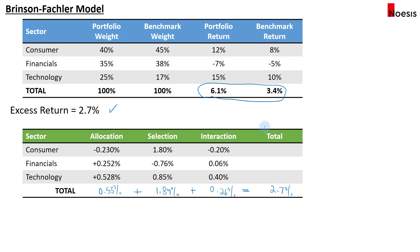When explaining the manager's performance through attribution, we say that out of 2.7%, most came from the selection effect — the manager is skilled at selecting securities in the consumer and technology sectors. For the allocation effect, the manager made the right allocation decisions in financials and technology. The interaction effect is essentially a residual — it represents the interaction between the allocation and selection effects.